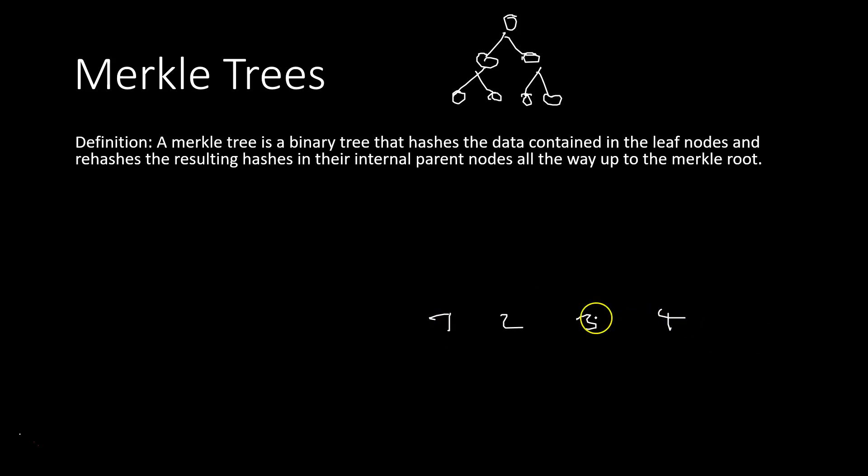The input to our tree are just these four numbers: one, two, three, four. First thing we have to do, we take the hash of those numbers.